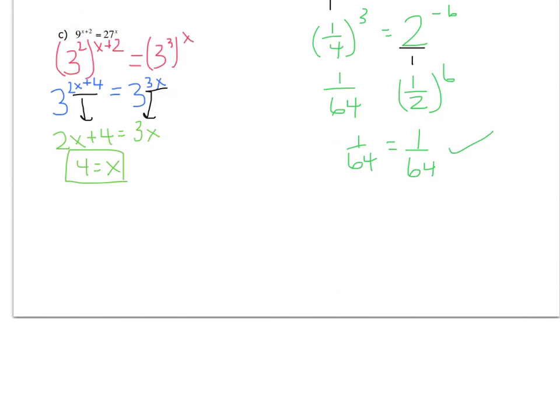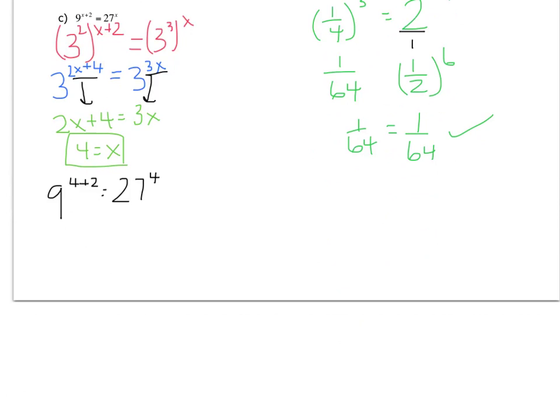And then especially in the complex ones, I want to go back to the original equation and plug in 4 and make sure that it works. So this becomes 9 to the 6th equals 27 to the 4th. So I definitely have to grab my calculator for this one. And then I get 531,441 for the left. And I also got that for the right. So it checked as well.